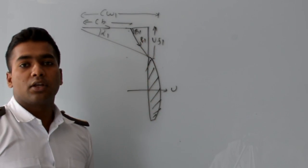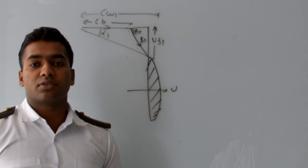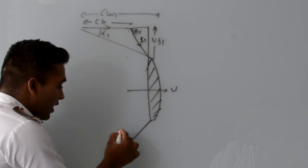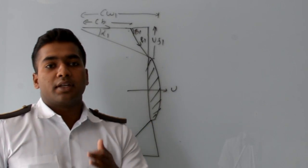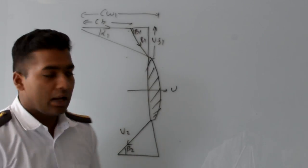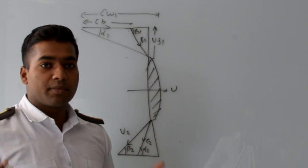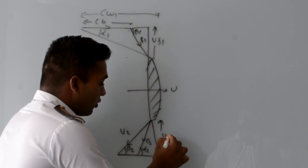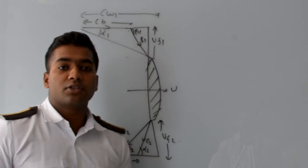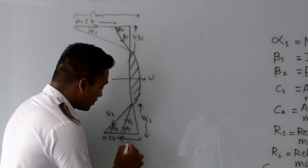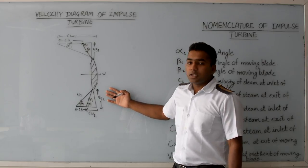Now we will draw the outlet velocity triangle of the moving blade. When the steam passes over the moving blade, it leaves the moving blade at the exit with an absolute velocity c2 at an angle alpha2. The velocity of flow at exit is vf2, the blade speed is cb, and this portion represents the velocity of whirl at the outlet of the moving blade.